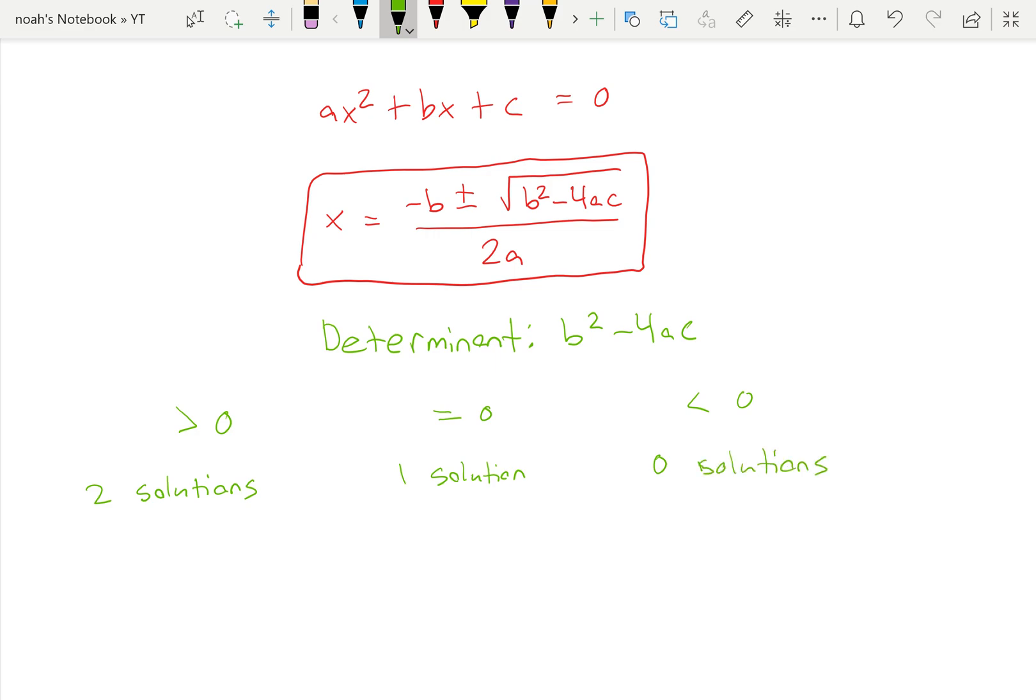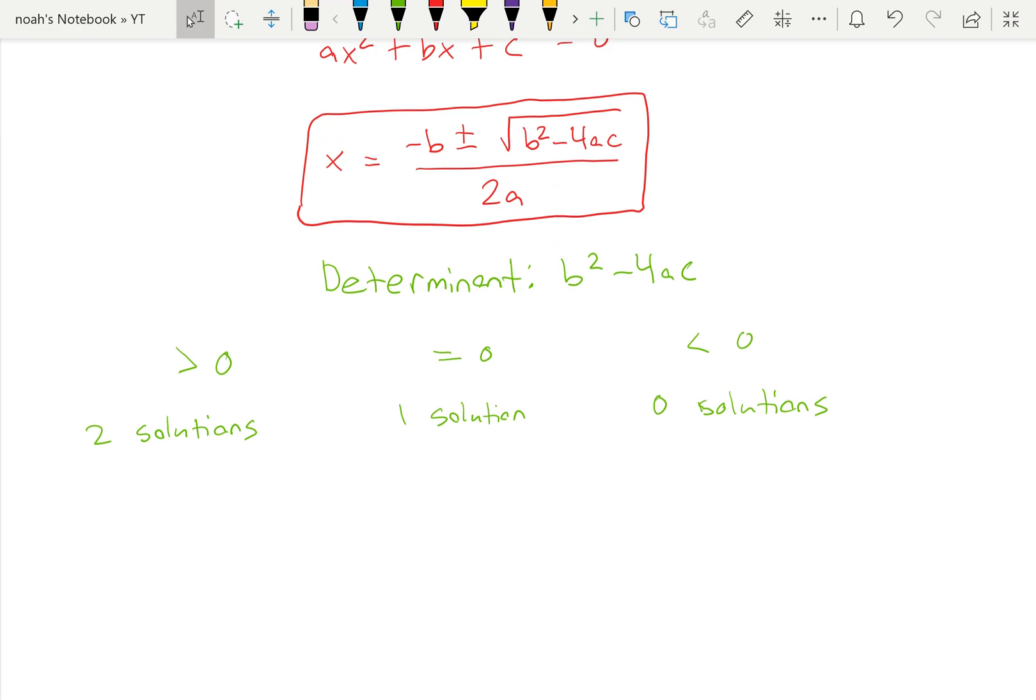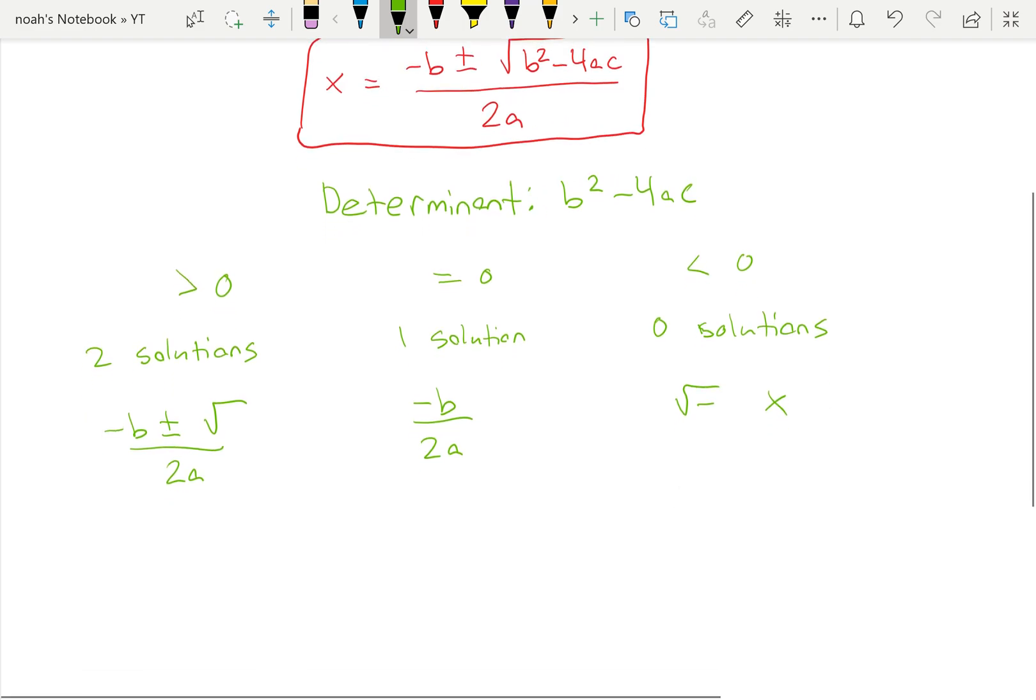Two solutions is negative b plus or minus over 2a. That's why there's a plus and a minus. One solution, the square root is gone, so it's just negative b over 2a. And no solutions is because you can't take the square root of a negative. So if you get this case, you can stop because there's no solutions to find.